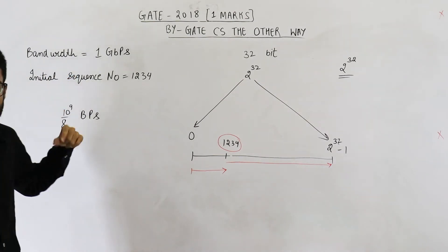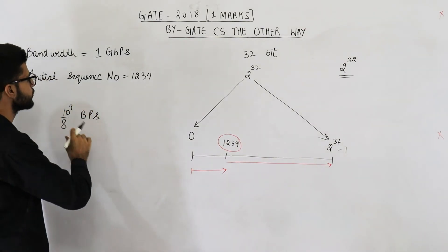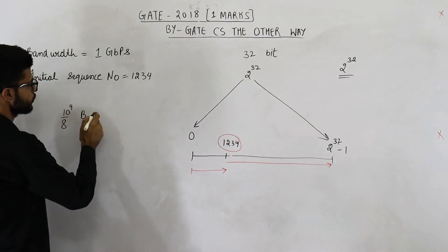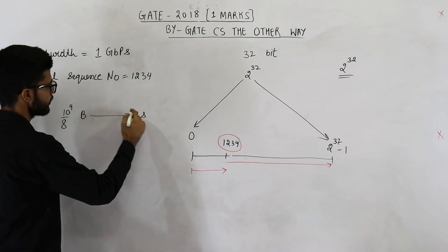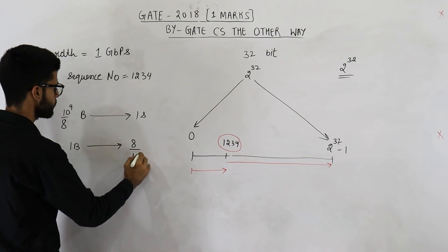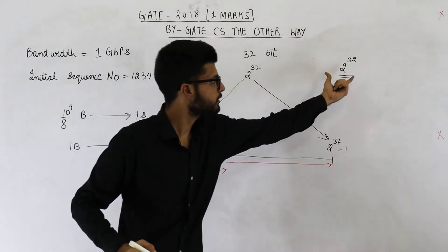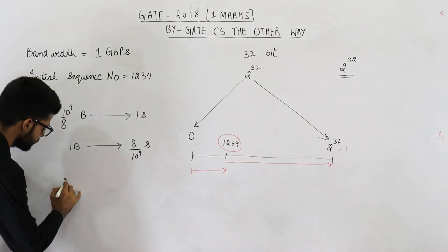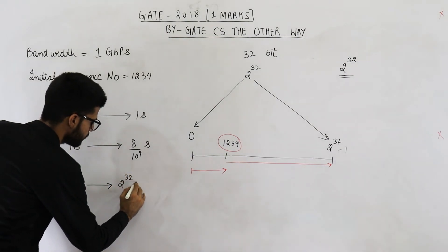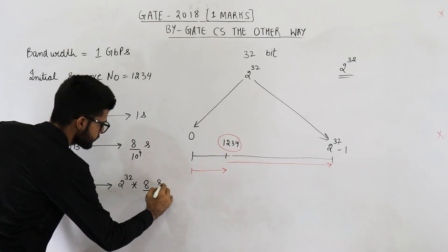And in case of amount of data or memory, the value of g will be 2 raised to the power 30. So don't take 2 raised to the power 30 here. Anyways, these many bytes of data can be transferred per second. So this is transferred in one second. One byte of data will be transferred in 8 upon 10 raised to the power 9 seconds. And 2 raised to the power 32 bytes of data, they will be transferred in 2 raised to the power 32 multiplied by 8 upon 10 raised to the power 9 seconds.